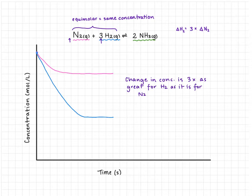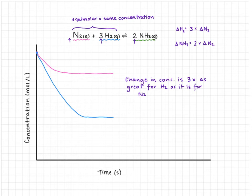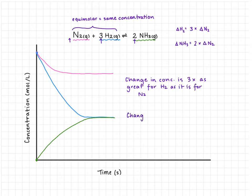Now we switch to our products. The coefficient for ammonia is 2, so it's going to experience a concentration increase twice as much as that of nitrogen. Because we only started with reactants, the concentration of ammonia will increase starting from zero. Over the same time period, ammonia should go up by six squares. The change in ammonia concentration is twice that of nitrogen.